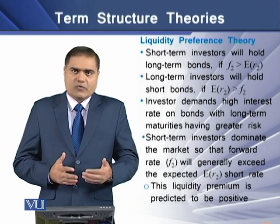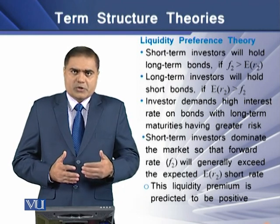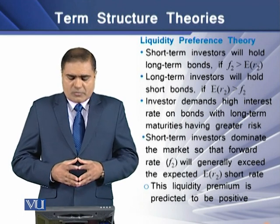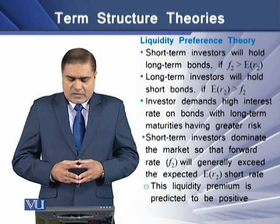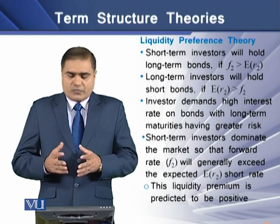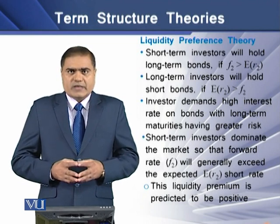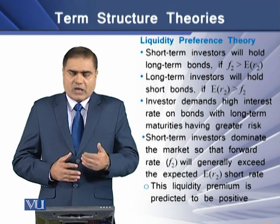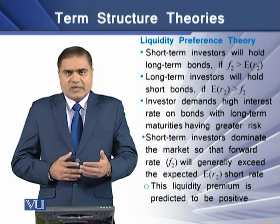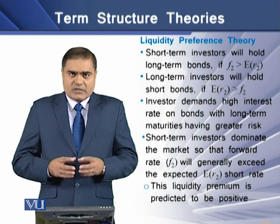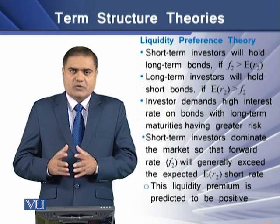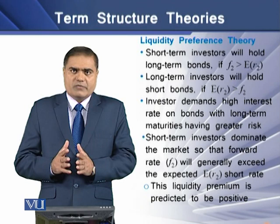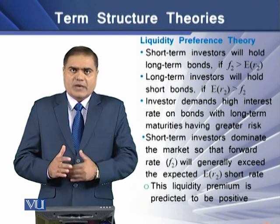So they demand a risk premium for the maturity risk. Whereas short term investors dominate the market, the forward rate f2 will generally exceed the expected short rate ER2. This means that the liquidity premium is predicted to be positive, and that is the liquidity premium which the short term investor is demanding.